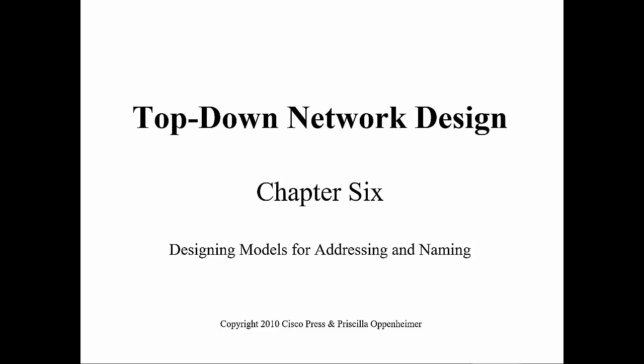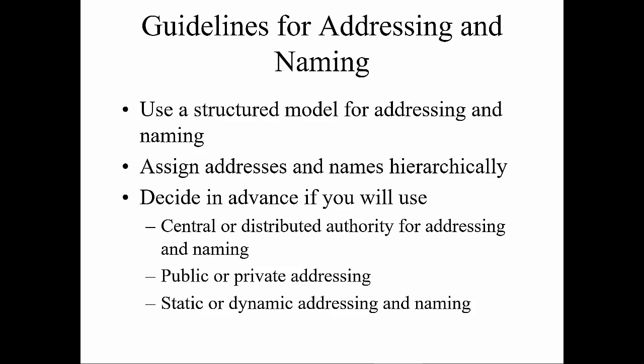Top-Down Network Design from Cisco Press, Chapter 6: Designing Models for Addressing and Naming. This chapter mainly focuses on IPv4 addressing and DNS naming conventions. Some guidelines for addressing and naming: we use a structured model — the address and name have a hierarchy design. Decide in advance whether you'll use centralized or distributed authority for addressing and naming. Are we going to be working with public or private addresses, and are we working with dynamic or static addressing and naming schemes?